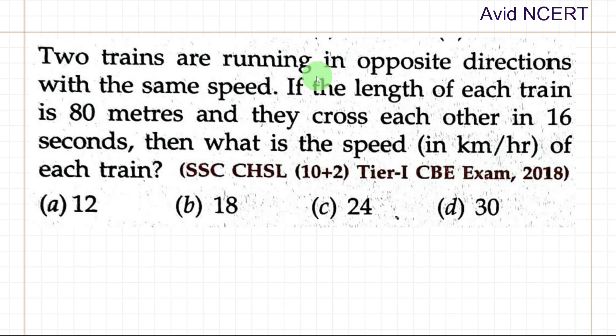From the first sentence, two trains are running in opposite direction with same speed. When trains are running in opposite direction, then speed equals speed of both trains, which is s plus s.